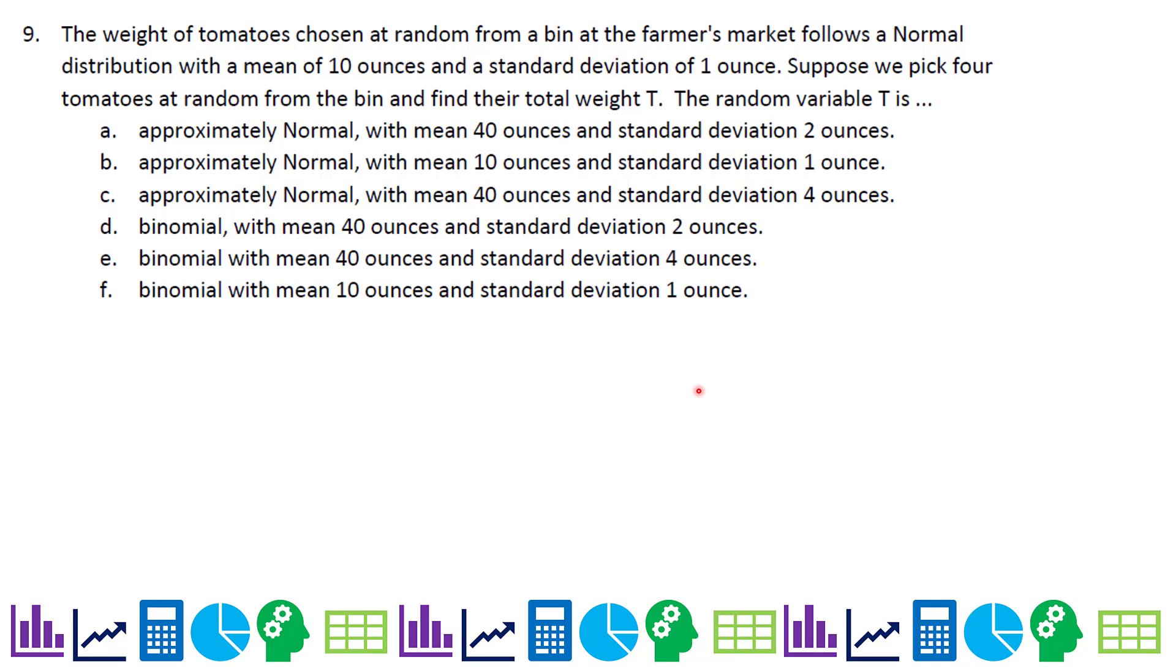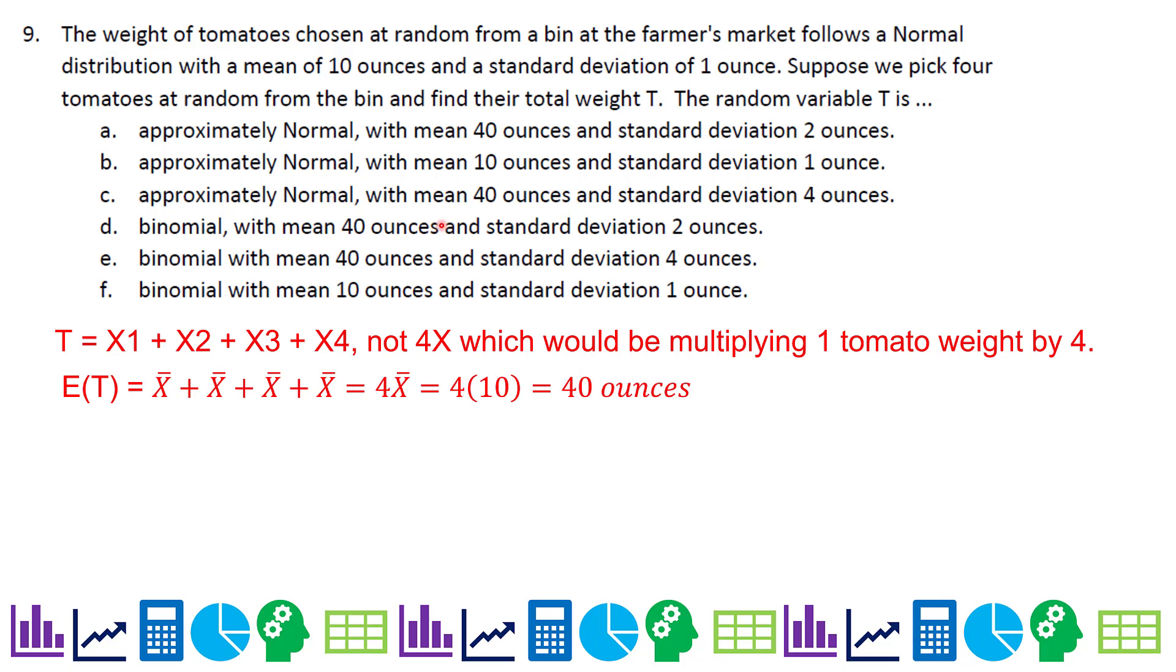Number nine. The weight of tomatoes chosen at random from a bin at the farmer's market follows a normal distribution with a mean of 10 ounces and a standard deviation of one ounce. Suppose we pick four tomatoes at random from the bin and find their total weight. We said it was a normal distribution, so first of all, I know it's not binomial. T is X1 plus X2 plus X3 plus X4. It's not I measure one tomato, multiply that weight by four to get the total weight. I have to put all four tomatoes together. So this is a combining situation. I'm going to take the mean of the first tomato or the expected value for the first tomato and the second and the third and the fourth and add them up. But they're all the same number. So it's just four times my mean, which is four times 10 or 40 ounces.